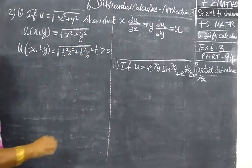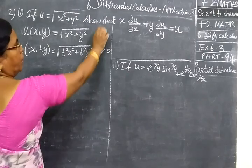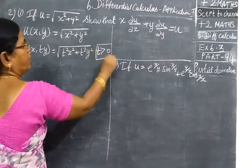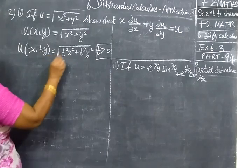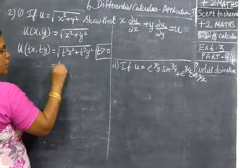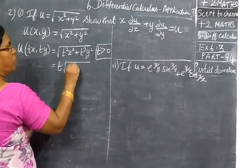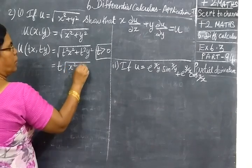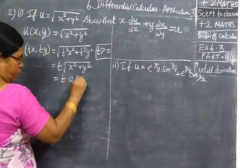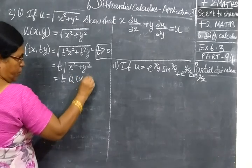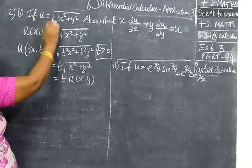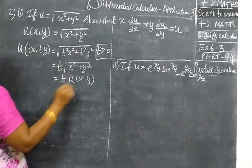That means we are multiplying by t where the value of t is greater than 0. So now we can take t square outside the root, giving t root of x square plus y square. This is equal to t times u of x, y, where u of x, y is the original function.